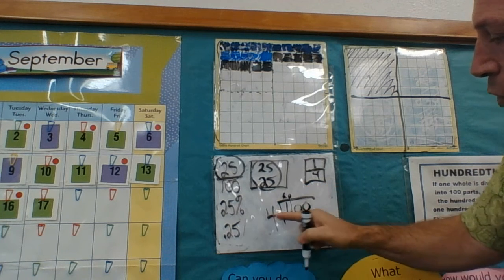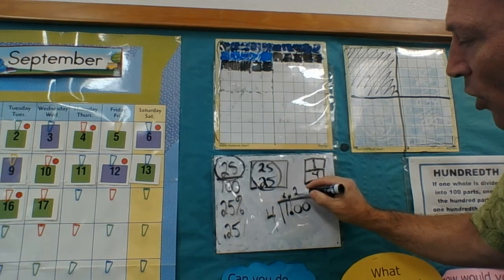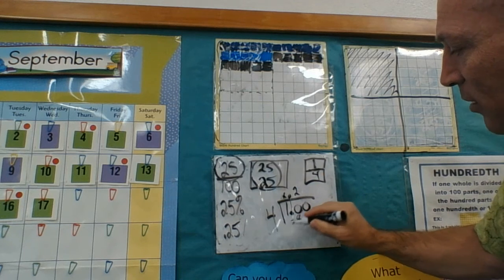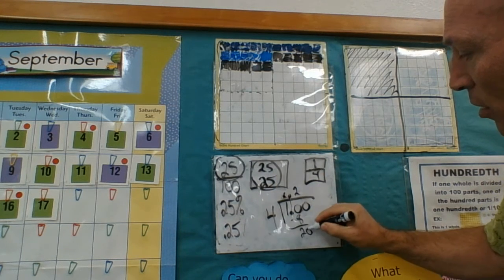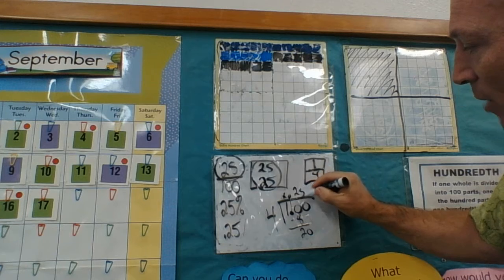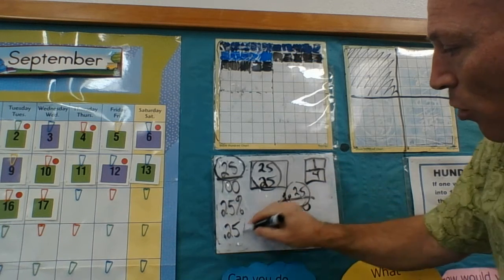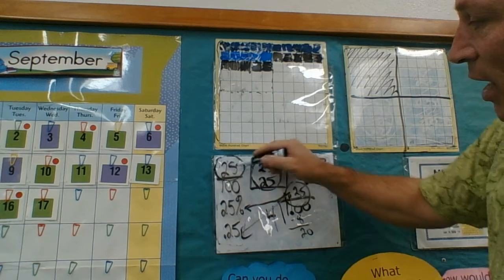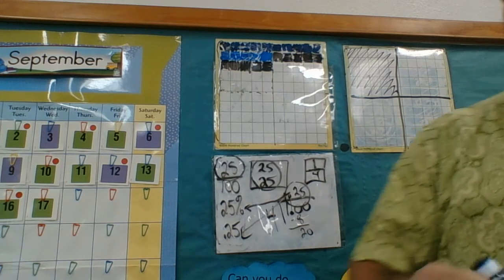Four goes into one? No. Four goes into 10? Two times. Two times four is eight. Four goes into 20? Five times. And lo and behold, there we go. We have our 25 hundredths, our 25%, and our 25 out of 100.